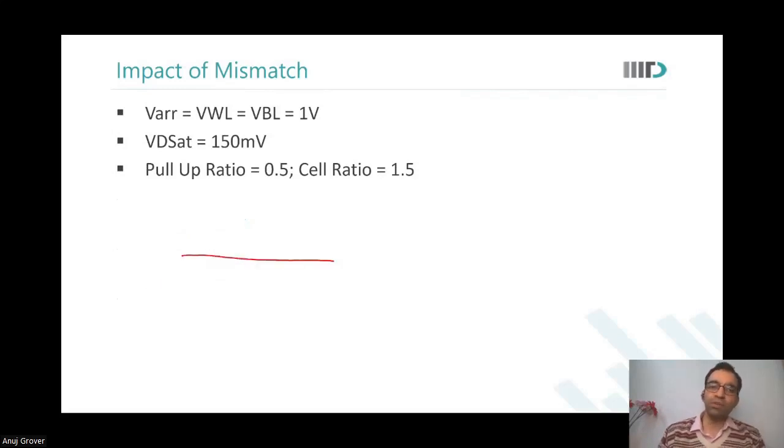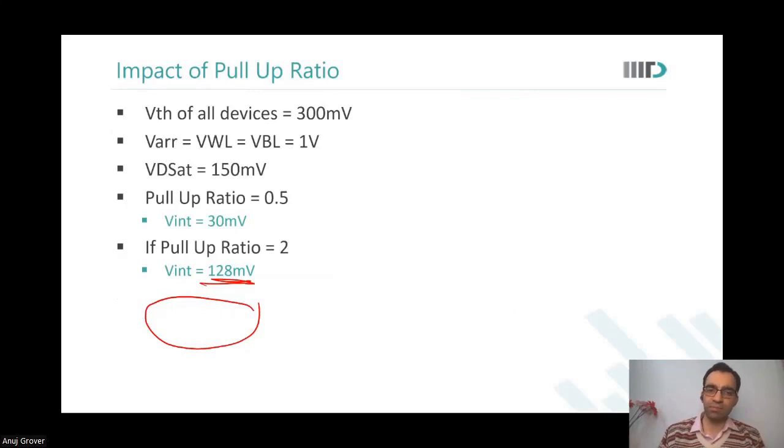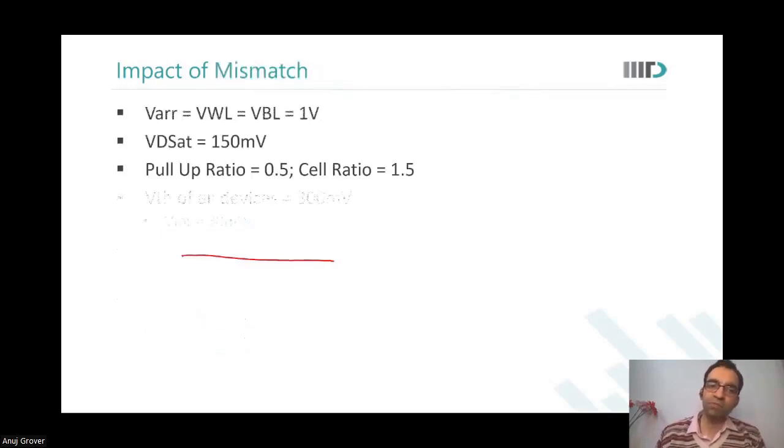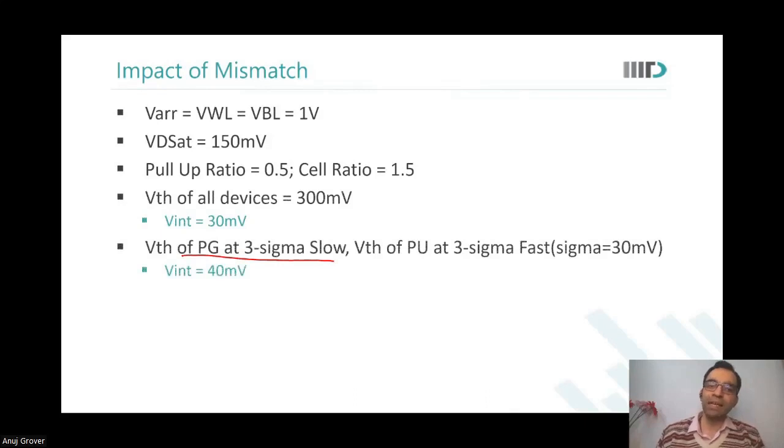See, what did we want? We wanted pass gate to be faster. Pass gate is faster means pull-up ratio is small. So for the worst case analysis in the presence of mismatch, we put pass gate at three sigma slow.